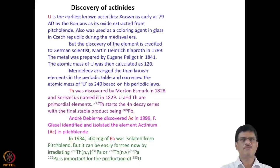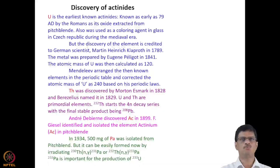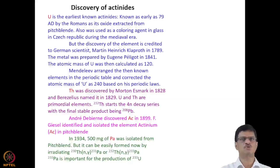The discovery of actinides: uranium is the earliest known actinide, known as early as 79 AD by the Romans, with its oxide extracted from pitchblende. It was used as a colouring agent in glass in the Czech Republic during the medieval era. The discovery of the element is credited to German scientist Martin Heinrich Klaproth in 1789. Uranium metal was prepared by Péligot in 1841, and the atomic mass was then calculated as 120. Mendeleev arranged the known elements in the periodic table and corrected uranium's atomic mass to 240 based on periodic laws.